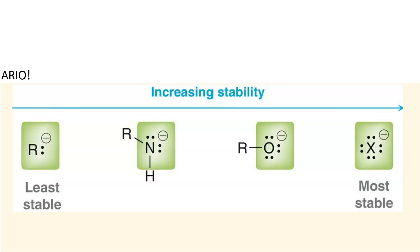Remember our old friend ARIO? Well, the A in ARIO stands for atom. So this is the atom where you get negative charge once an acid is deprotonated. Carbanions are the least stable. And halogens are the most stable. And oxygen is second most.